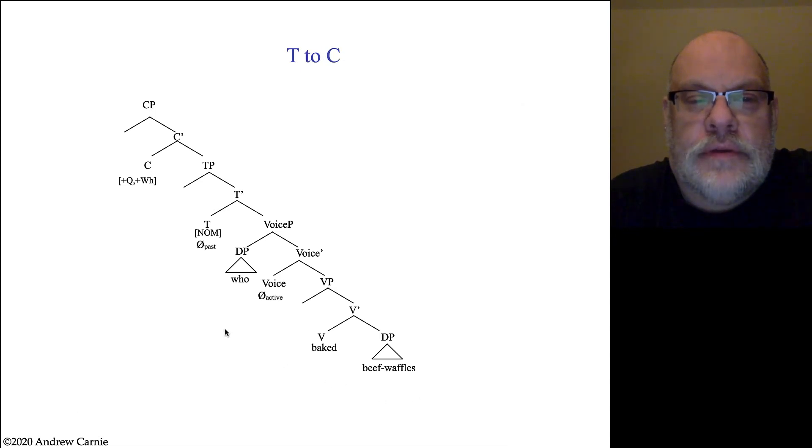The next thing we have to do is account for the plus Q feature here. Now, normally we would do do insertion. The fact that we don't do do insertion in this situation is a puzzle and a stipulation. So in video 12.2, when we did an object WH movement, we stuck a do into this position and then moved it. We didn't do that here. Why that is, is a bit of a mystery.